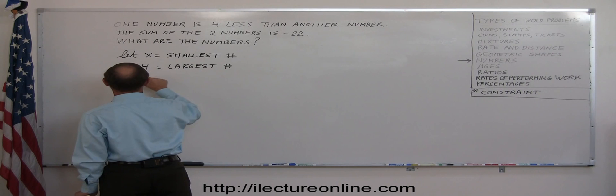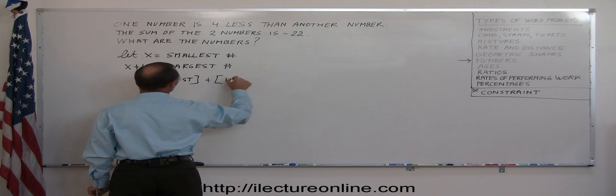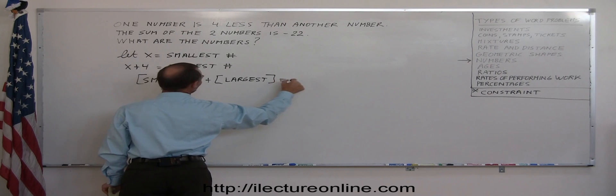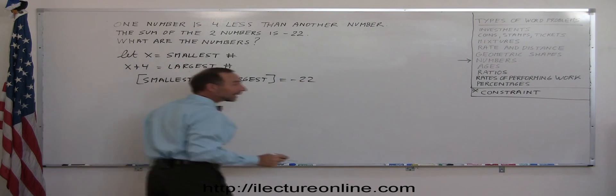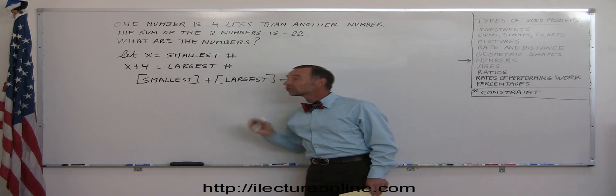Okay, so the smallest plus the largest adds up to minus 22. All right, again, I took the sentence of the constraint and turned it into a mathematical equation.